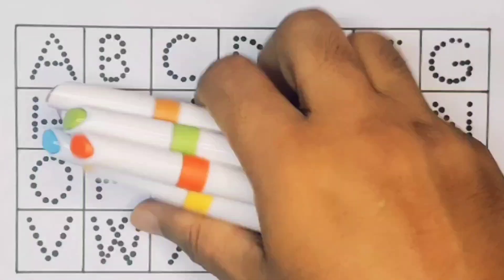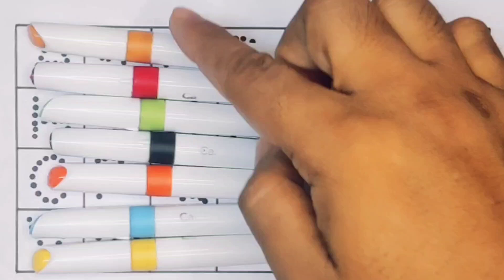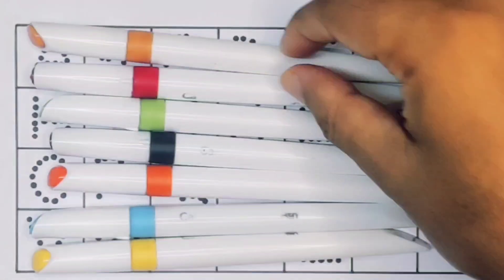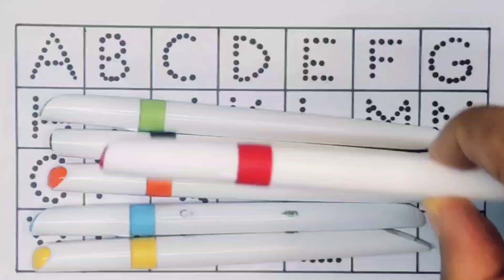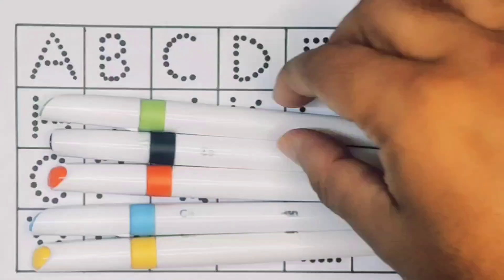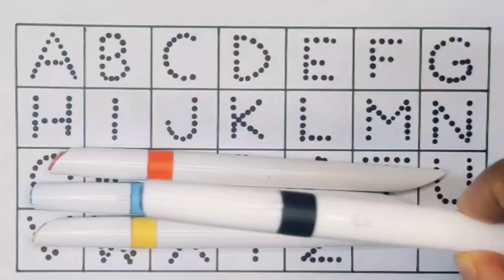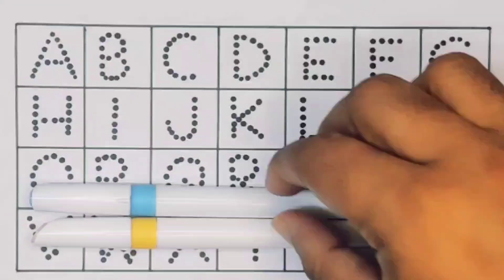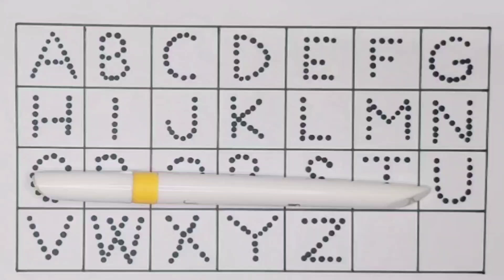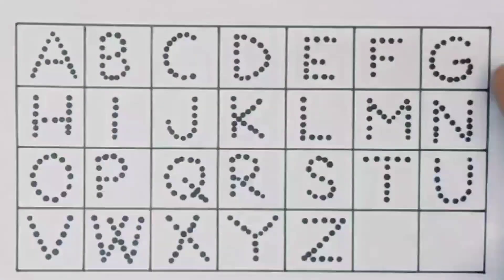Hello kids, welcome to my new video. First we're going to learn the color names: brown color, red color, light green color, black color, orange color, sky blue color, yellow color. Now let's learn the alphabet A to Z.